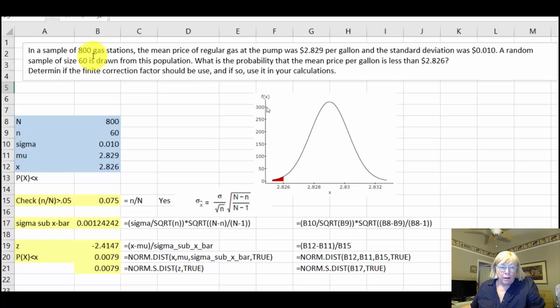We are sampling 60 of those stations, so we need to know if that sample size of 60 is large with respect to the 800 in the population. Capital N is 800, small n (the sample size) is 60, sigma is the population standard deviation (0.010), we're given a mean of $2.829, and we're asked about the probability of getting a price less than $2.826.